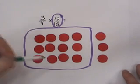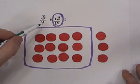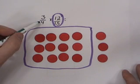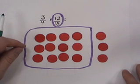3 quarters of 12 fifteenths. What we must do now is make 4 equal parts, according to our denominator of our first factor.